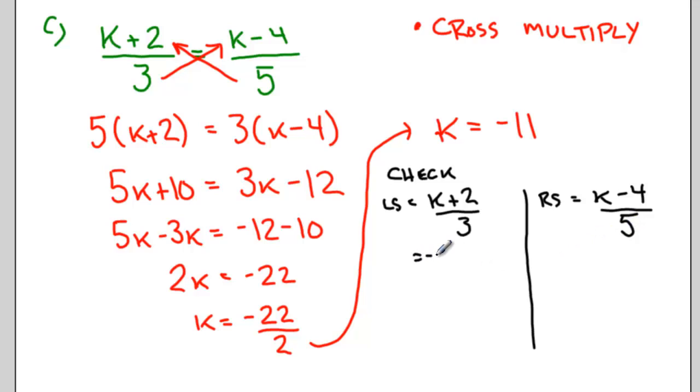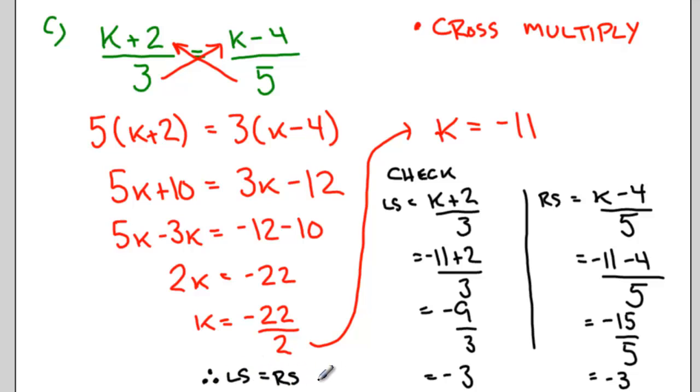If I plug in negative 11 for k, on the left side I get negative 9 thirds or negative 3. On the right side when I plug in negative 11, I end up with negative 15 over 5, which also reduces to negative 3. So my left side and right side are equal. My answer is correct.